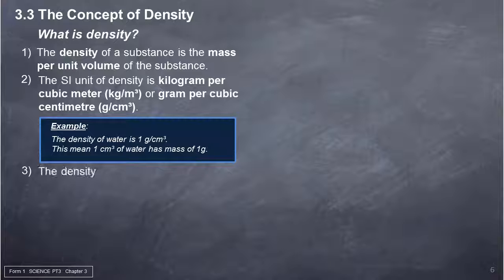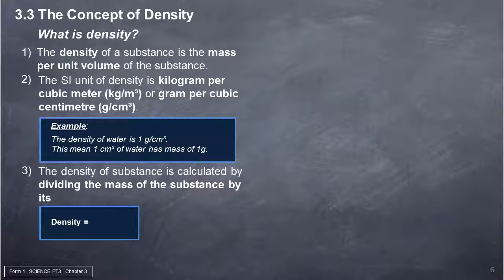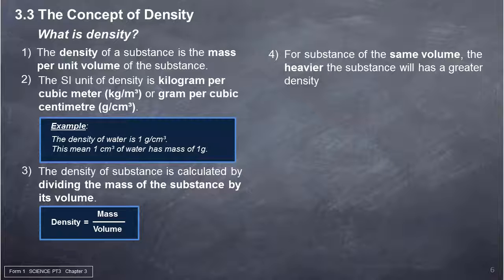3. The density of a substance is calculated by dividing the mass of the substance by its volume. 4. For substances of the same volume, the heavier the substance, the greater its density.